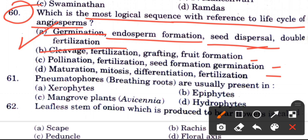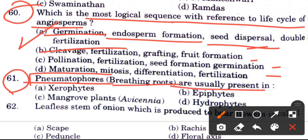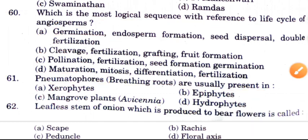Question 61: Pneumatophores, meaning breathing roots, are usually present in which plants? Options are xerophytes, epiphytes, mangrove plants, or hydrophytes. The answer is C, mangrove plants.